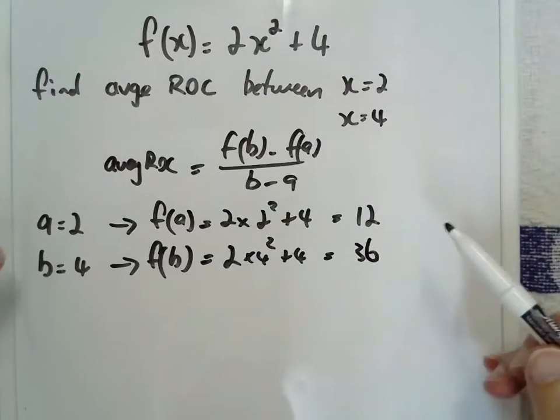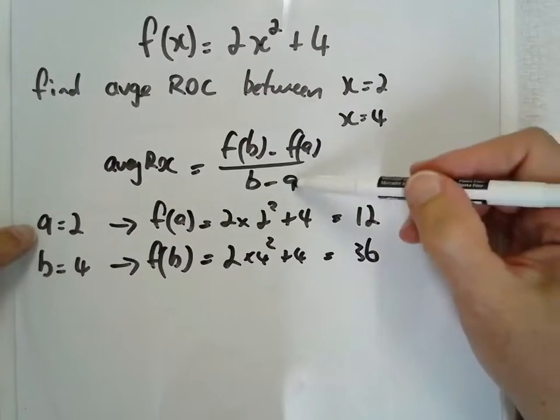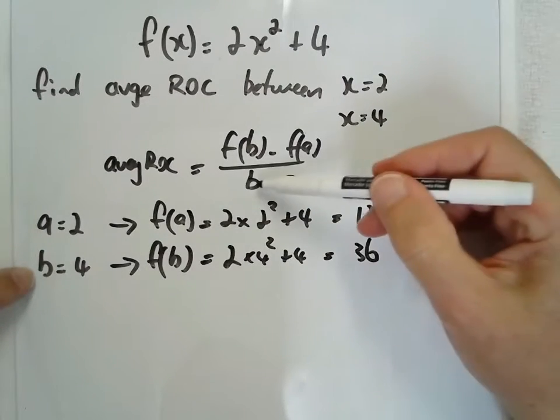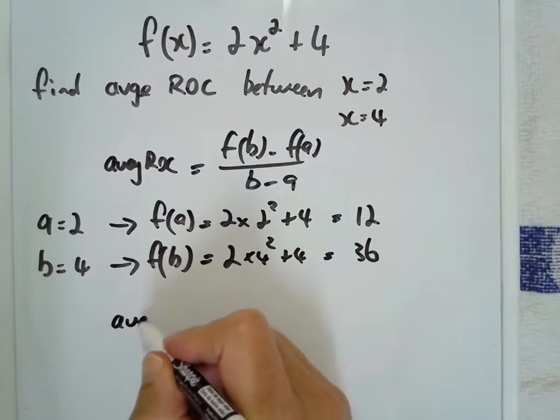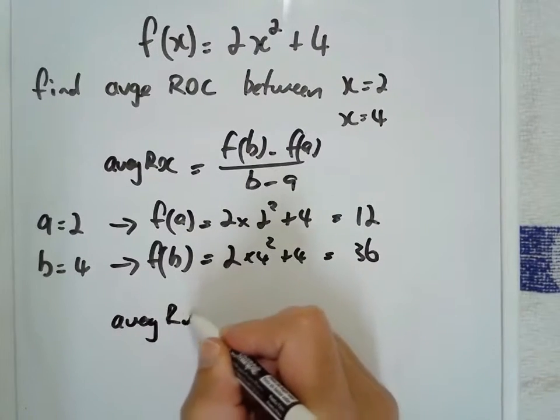So we've established pretty quickly that our A is 2, our f of a is 12, our B is 4, and our f of b is 36. Now we just substitute straight in to average rate of change.